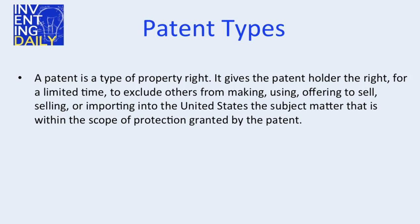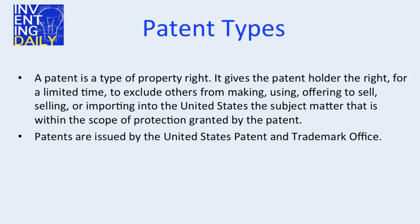Now we're going to talk about patent types. A patent is a type of property right. It gives the patent holder the right, for a limited time, to exclude others from making, using, offering to sell, selling, or importing into the United States the subject matter that is within the scope of protection granted by the patent. Patents are issued by the United States Patent and Trademark Office, or the USPTO.